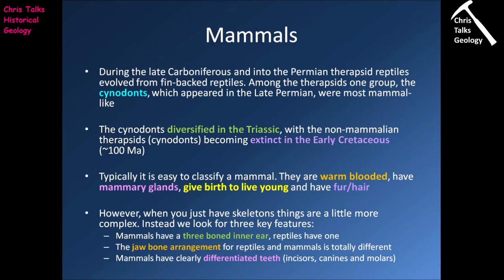Typically it's relatively easy to classify an animal as a mammal. Mammals are warm-blooded, they have mammary glands, they give birth to live young, and they have hair or fur. The problem is that when you're working with a skeleton, these particular features typically aren't going to be visible in the fossil. So instead, we need to look for other features that will allow us to identify a skeleton as belonging to a mammal or a mammalian-like creature.